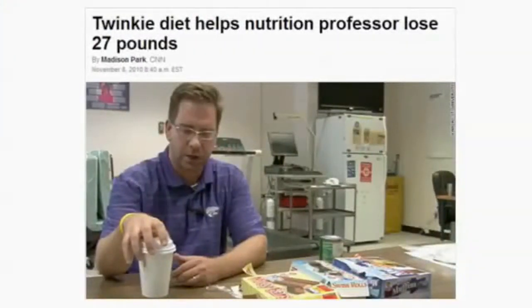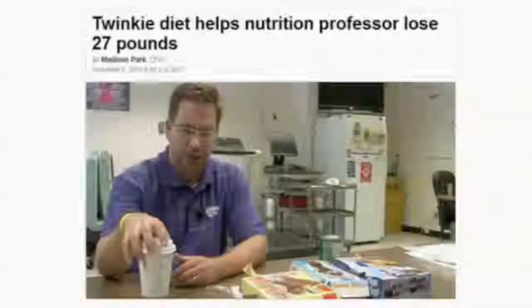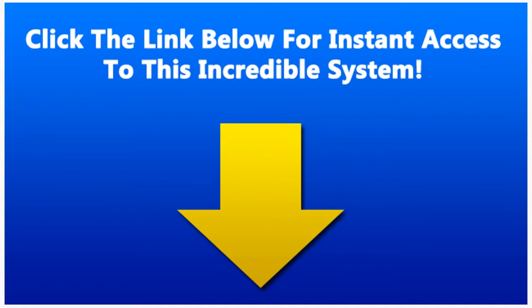You see, this is a picture of Mark Haub, a professor of human nutrition at Kansas State University, who went on a 10-week diet eating nothing but junk food. This picture is from an article that CNN wrote about him. In this interview with CNN, he reported he ate almost nothing but Twinkies, Nutty Bars, and Powdered Donuts. And at the end of 10 weeks, he lost a remarkable 27 pounds. How did he do it? It's simple, really. Even though he was eating very nutritionally bad food, he ate much less in total calories over the 10 weeks. See, CNN reported he only ate less than 1,800 calories a day, when he normally consumed about 2,600 calories daily.